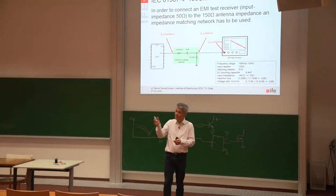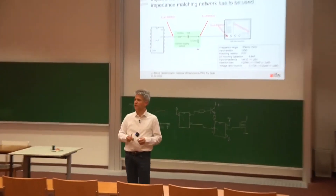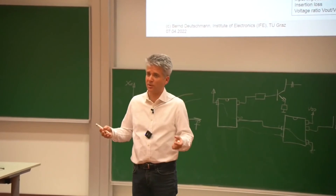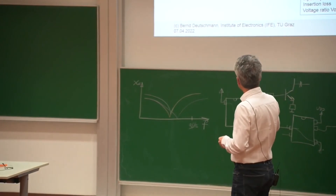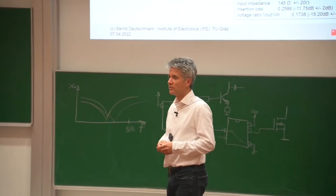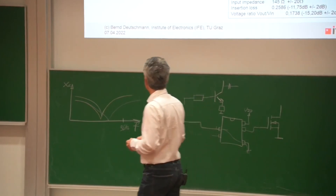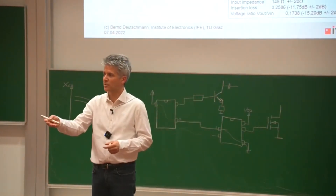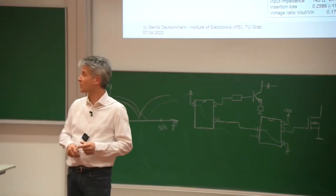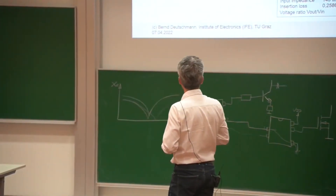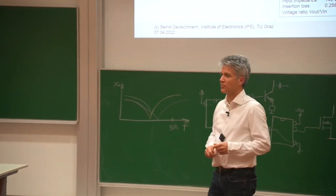Another important function of the capacitor is that it acts as a DC block. This is critical when measuring noise at a battery supply pin — some EMI receivers cannot accept a DC signal at their input. The capacitor in the 150-ohm network therefore serves a dual purpose: defining the series impedance for the measurement, and blocking DC so the coupling network can be connected directly via coaxial cable to the EMI receiver.